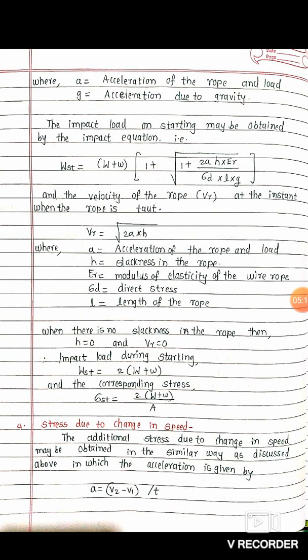This is the equation for calculating the impact load on starting, WST. The velocity of the rope VR at the instant when the rope becomes taut is: VR equals square root of (2a into H), where a is the acceleration of the rope and load, and H is the slackness in the rope.